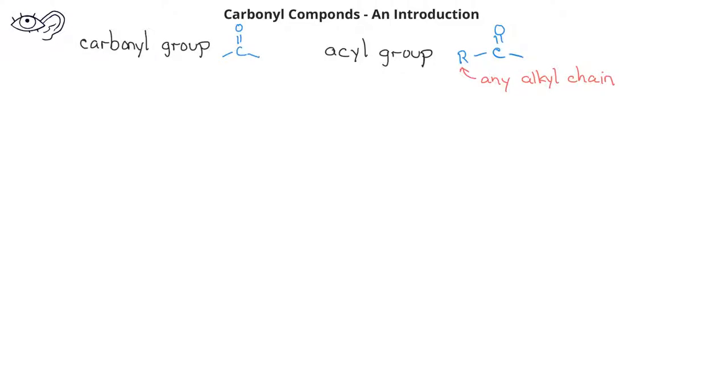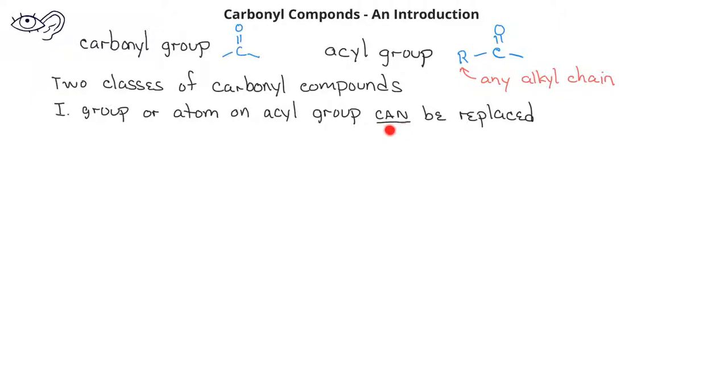Carbonyl compounds can be divided into two different classes. This division is based on the group that is attached to the acyl group. The first class of carbonyl compounds are those that have a group or atom on the acyl group that can be replaced.